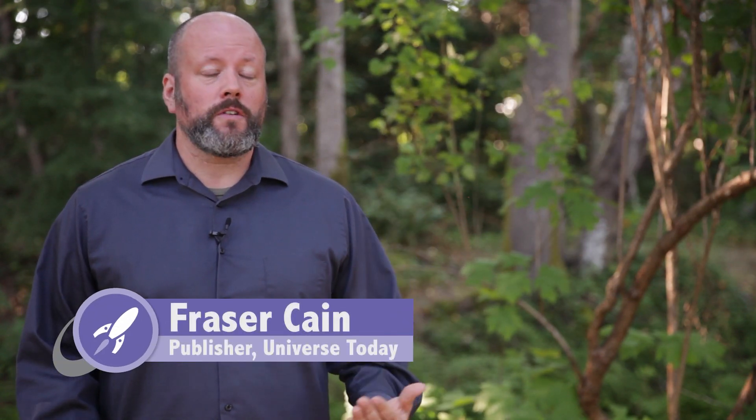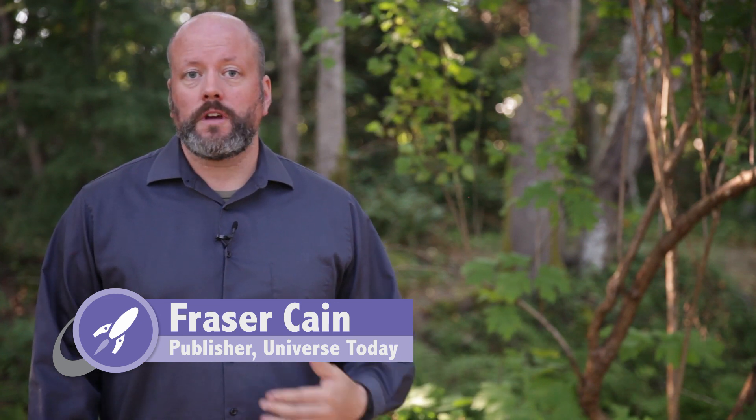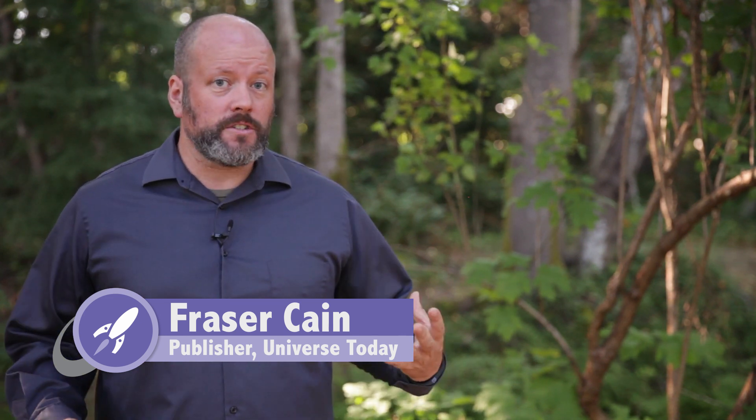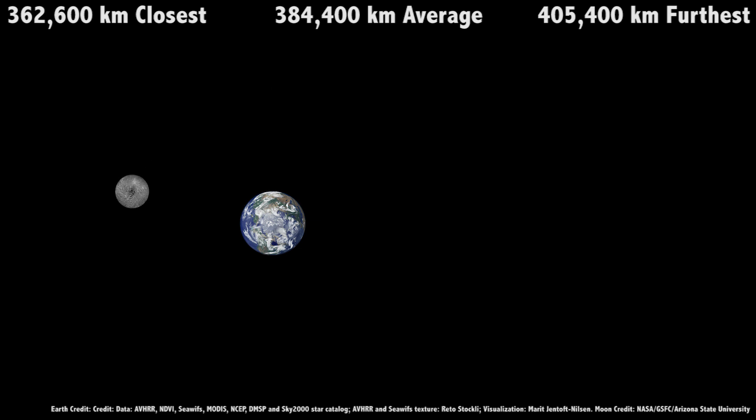Thank you very much. The Earth's Moon is located at an average distance of 384,400 km away. I say average, because the Moon actually falls in elliptical orbit. Its closest point is only 360,600 km, and at its furthest point, it's 405,400 km.